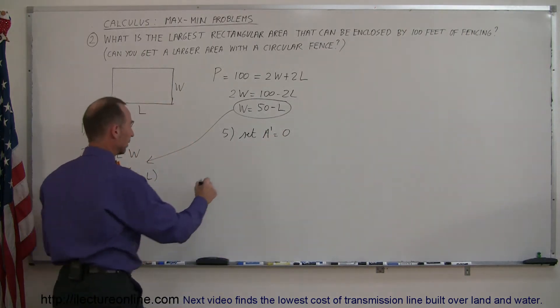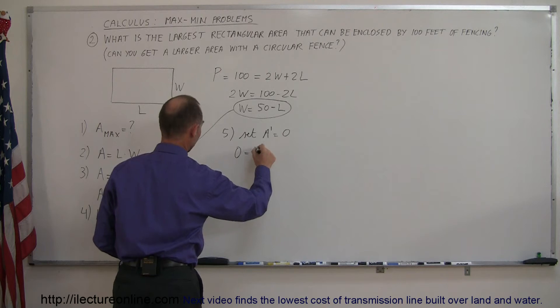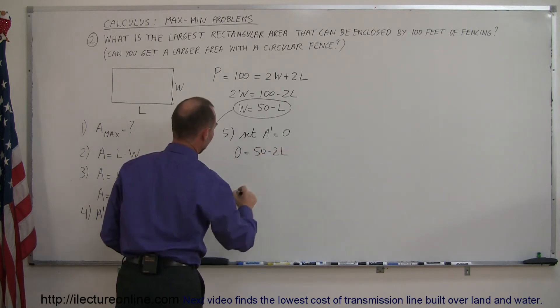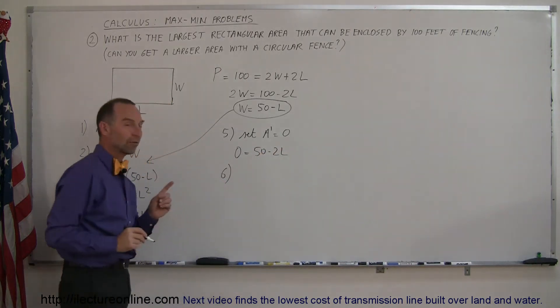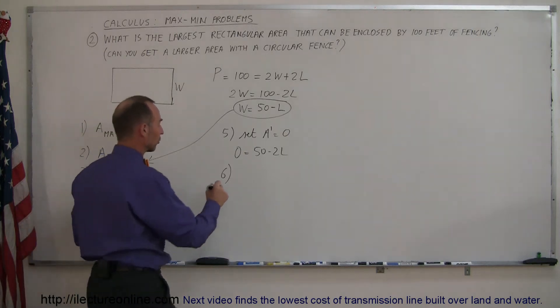And so when we do that, we get 0 is equal to 50 minus 2L. And then finally, we're going to solve that equation for L.